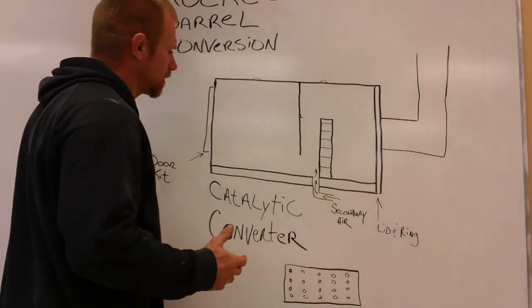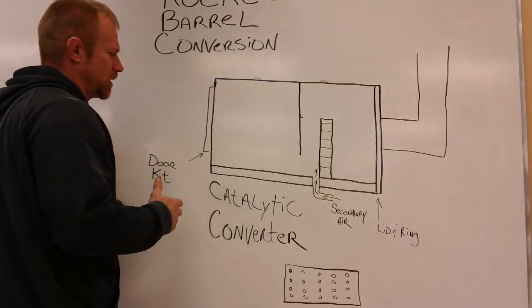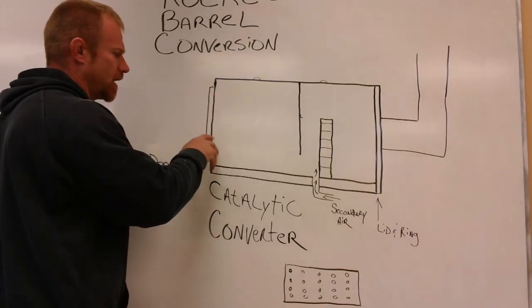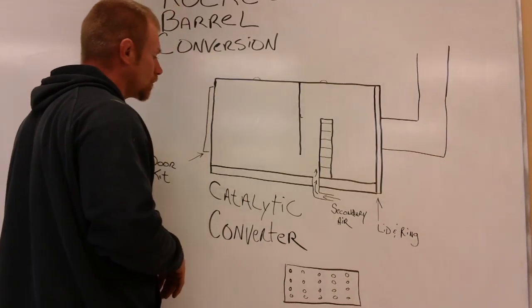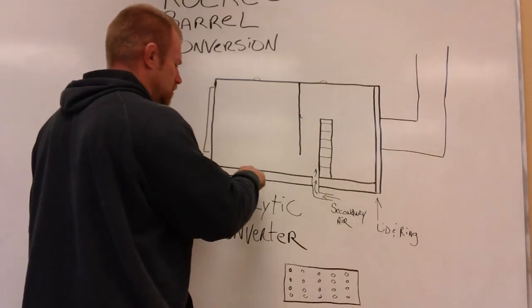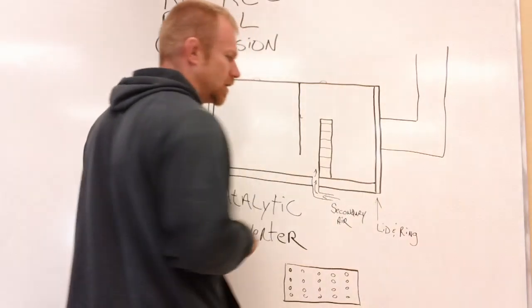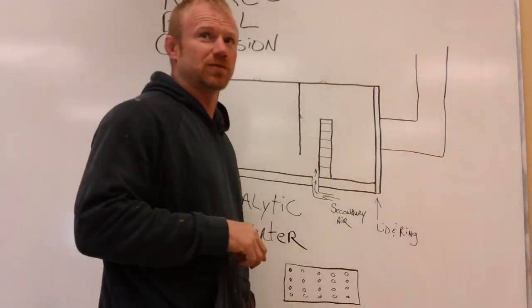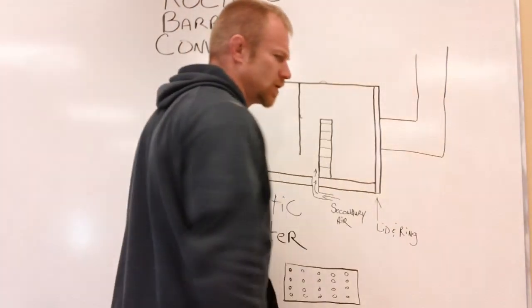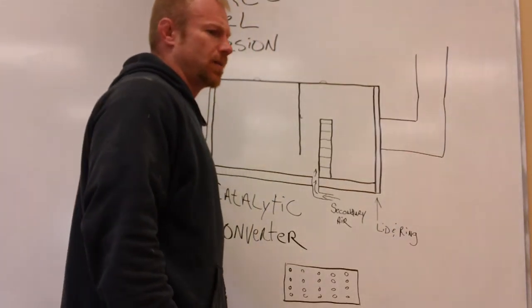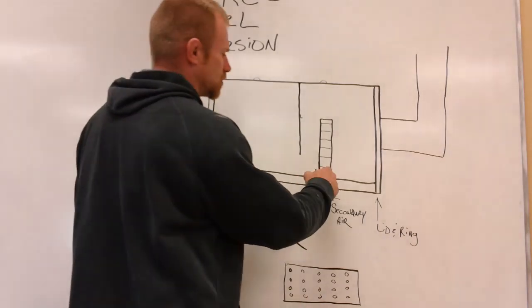We put the normal door kit here and it's got the airflow regulator here and everything on it. First thing we do is pour two inches of Hawthorn refractory fire clay in the bottom of the barrel. That gives a good flat surface in there.